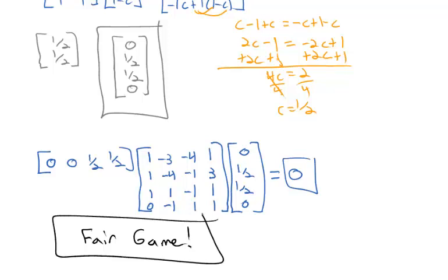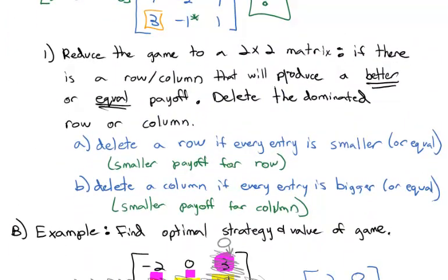So the simple answer is: if the matrix is too big, reduce the game to a two-by-two matrix by getting rid of rows or columns that produce a worse or equal payoff. Rows are worse if they're smaller or equal; columns are worse if they're bigger or equal. Delete those rows and columns until you're down to a two-by-two, then solve using our mixed strategy method from the previous lesson. The only remaining question is what to do if you can't reduce by dominance — unfortunately that's beyond the scope of this course, but you can explore full game theory at the university level.